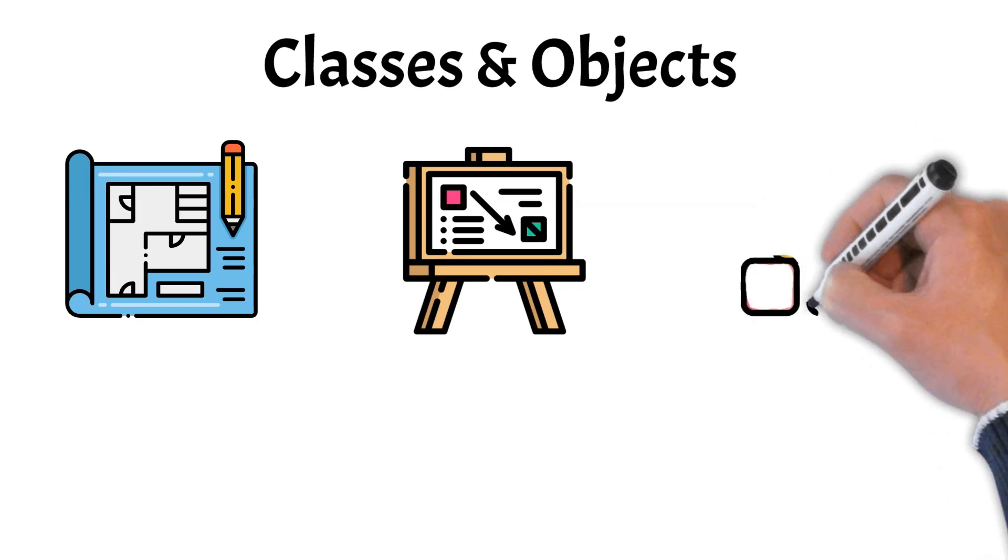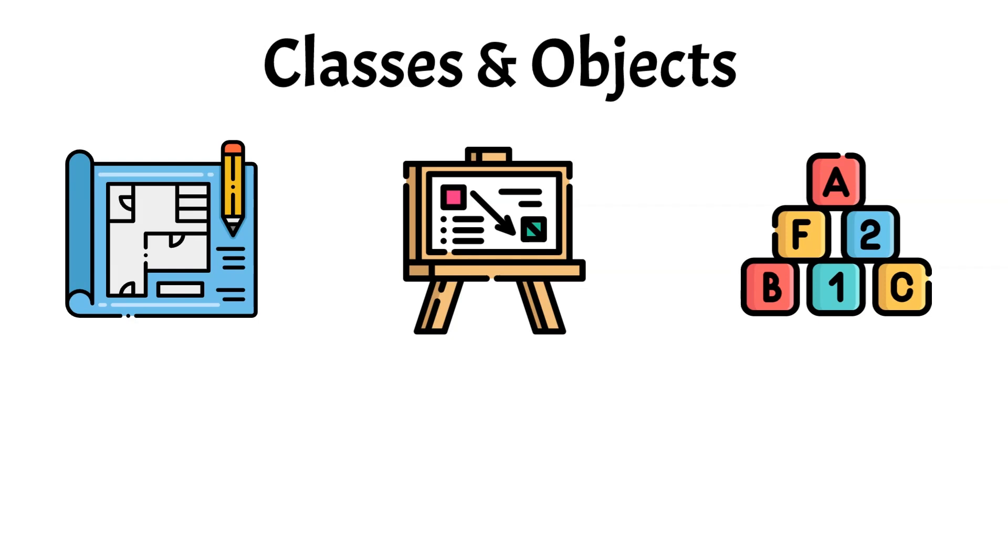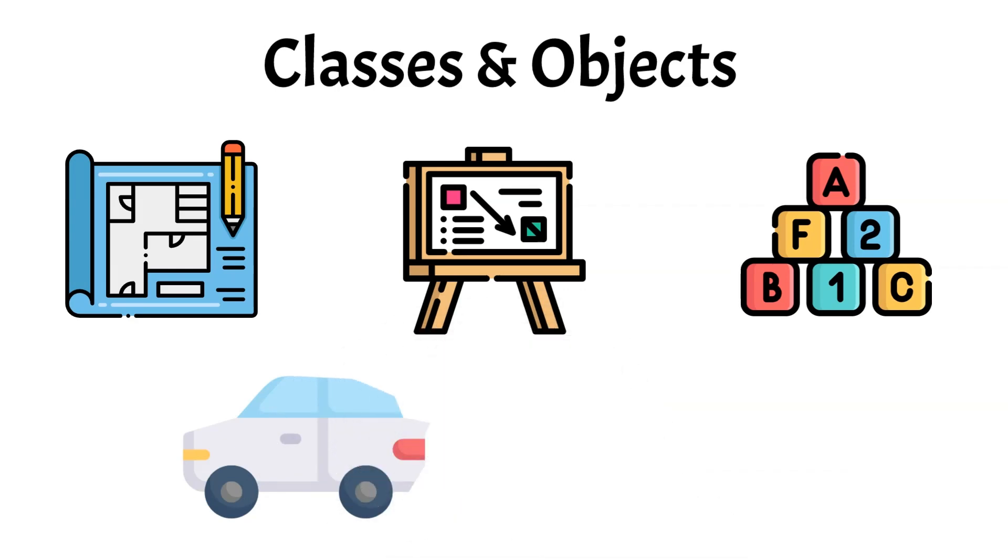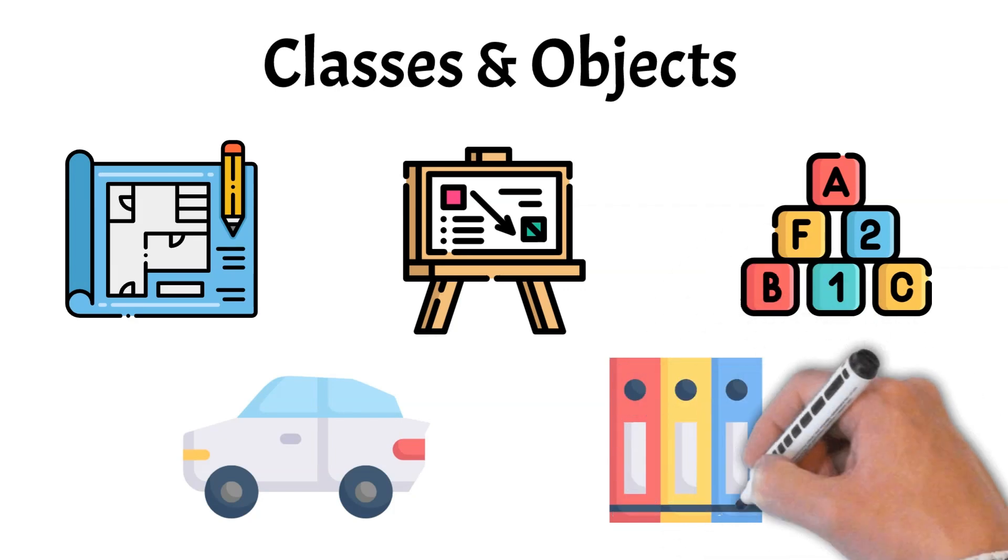It's a specific example that has the attributes and can perform the actions defined by the class. For example, you might have a class called car that outlines characteristics like color and make and actions like start and stop. Each individual car you create from this class, like a red Toyota or a blue Honda, is an object. By defining classes, you can create multiple objects with similar structure but different values for their properties.